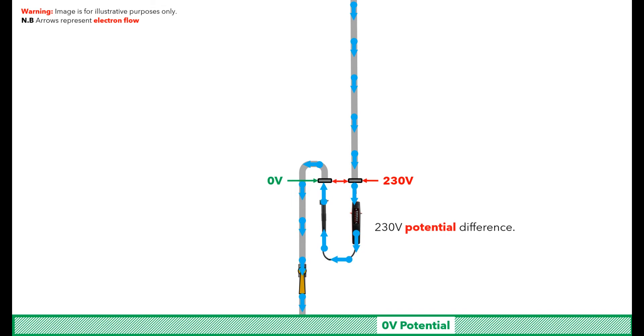With the voltage indicator connected to the difference in potential, the electrons will start to flow to that zero potential, and the potential difference will be displayed. This is why it is always a good idea to connect your test probes to the zero potential first, so that you are not waving the live end around.